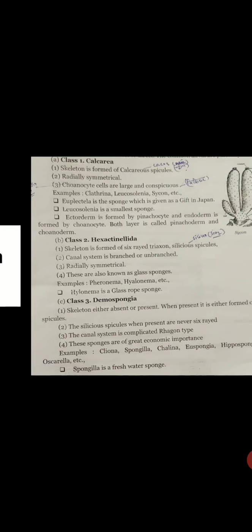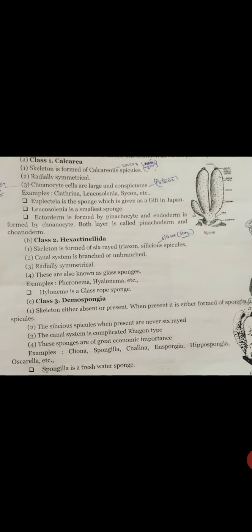First class: Calcarea. Calcareous or lime. The spicules - what are spicules? They are calcareous spicules, meaning made of calcium carbonate.